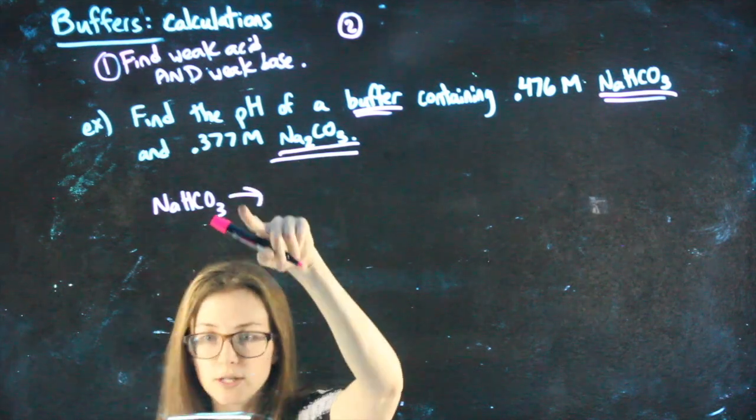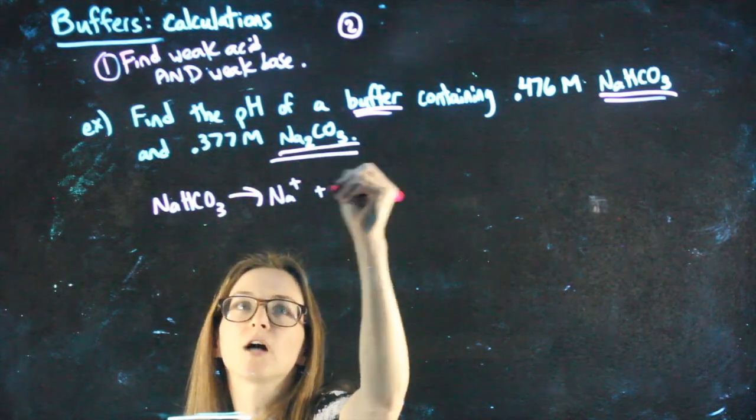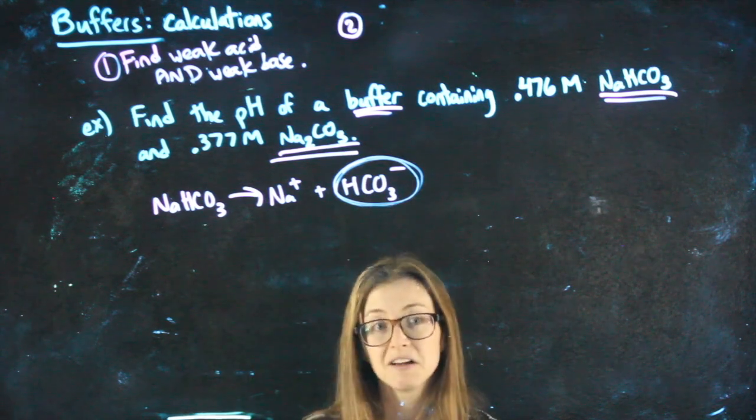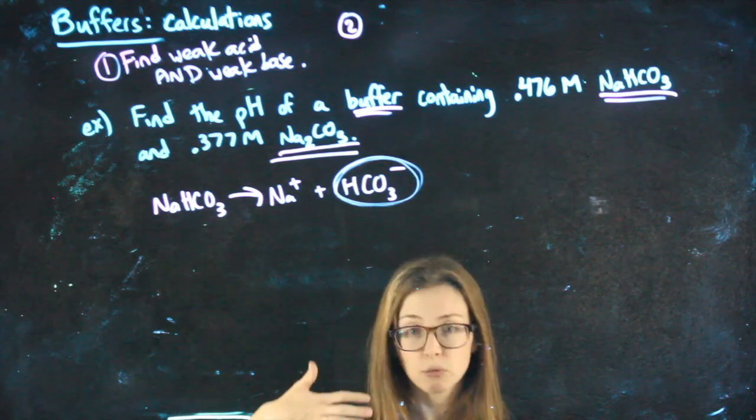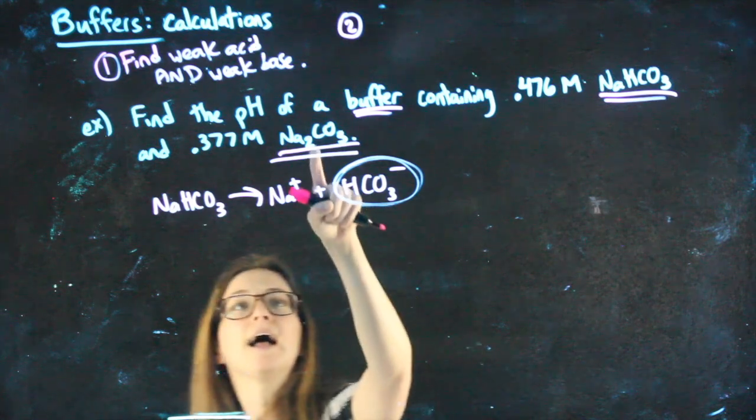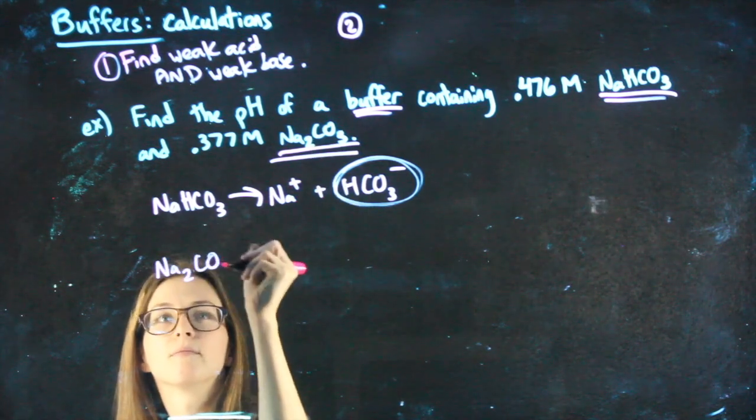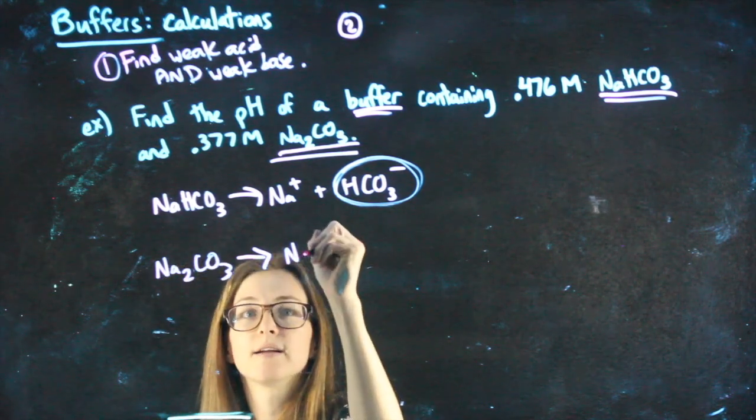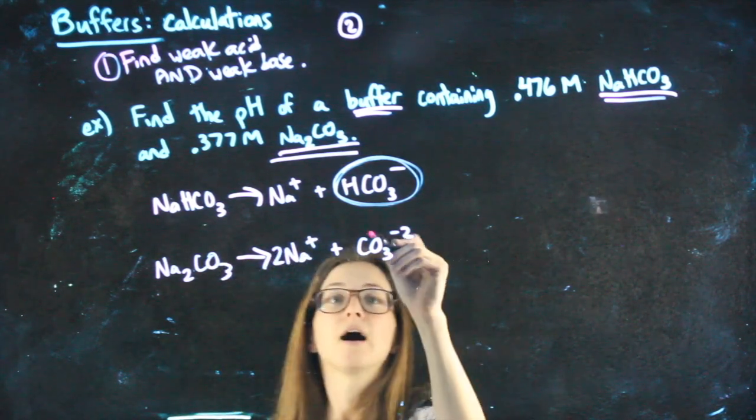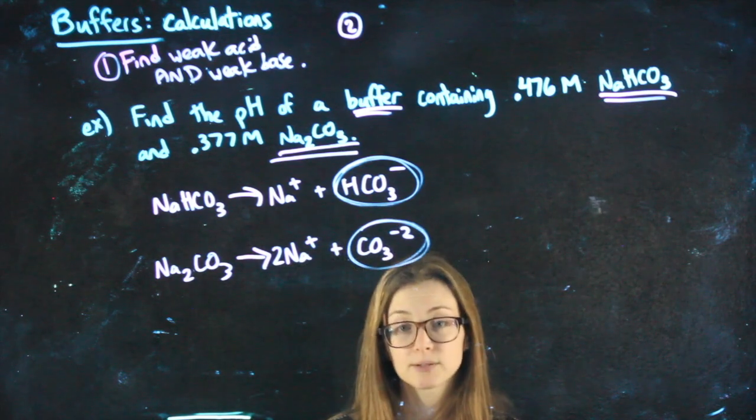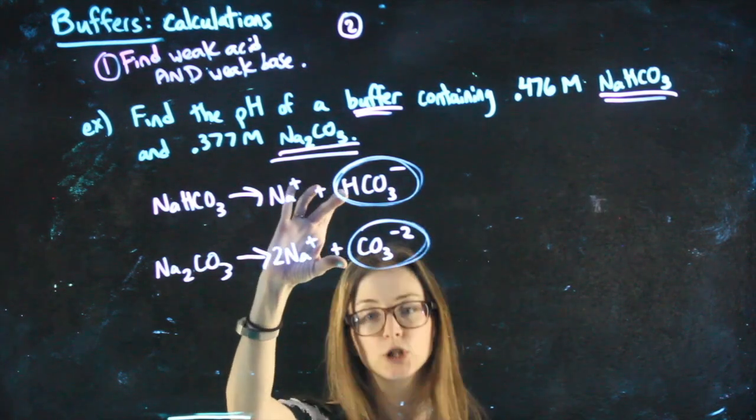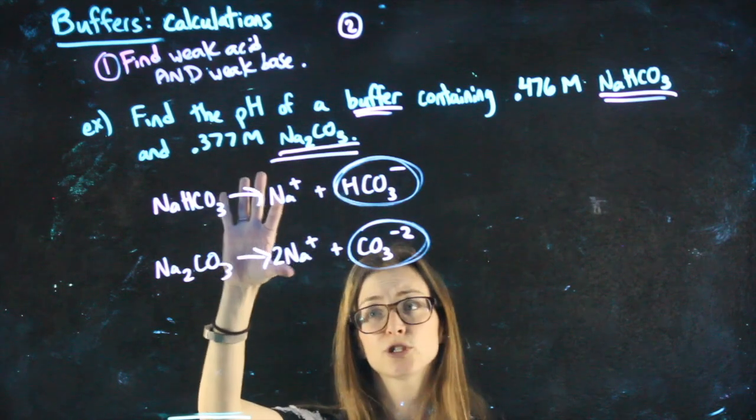So NaHCO3, it's a salt, so I use a single arrow. The sodium falls off and leaves me with HCO3 minus. This is something that looks like it could be a weak acid or a weak base. The truth is, it can be both. So we'll have to wait until we find its conjugate to know which one's the acid and the base based on which one has the extra hydrogen. Na2CO3 is a salt, so we use a single arrow to dissociate it. The sodium and the carbonate separate, and I would balance it like that. That is something that could be a weak base. So in this salt, I found this hiding, and in this salt, found this hiding. That is a conjugate pair because they're different by only one H. That's why I know the sodiums have nothing to do with it.